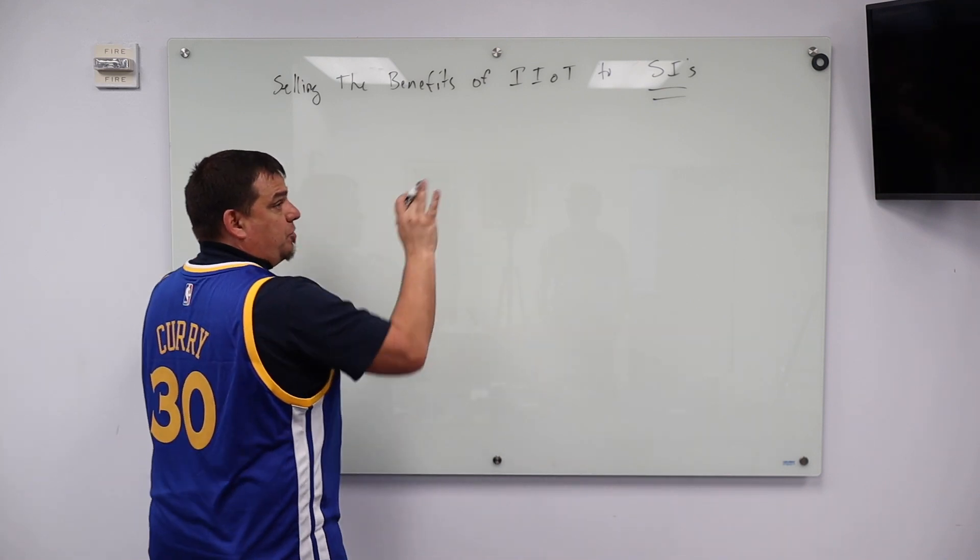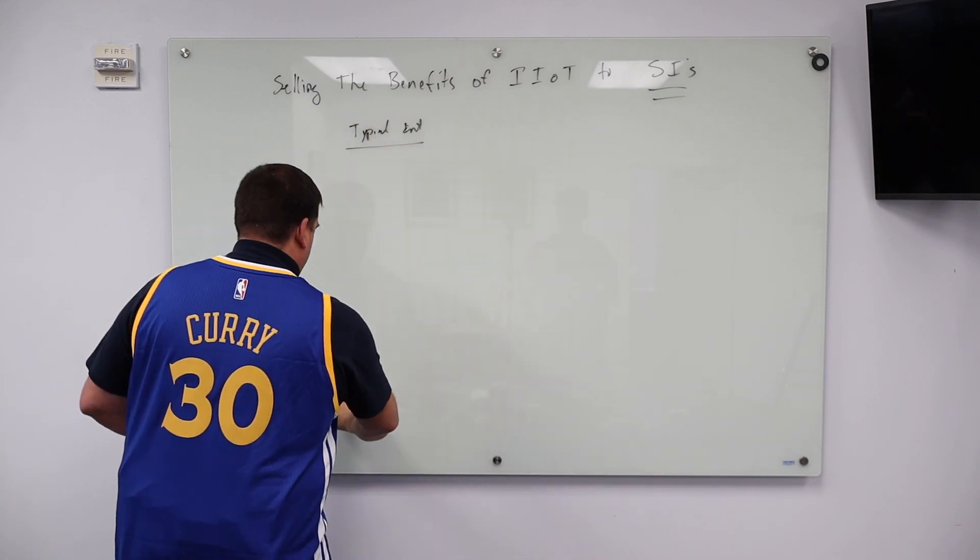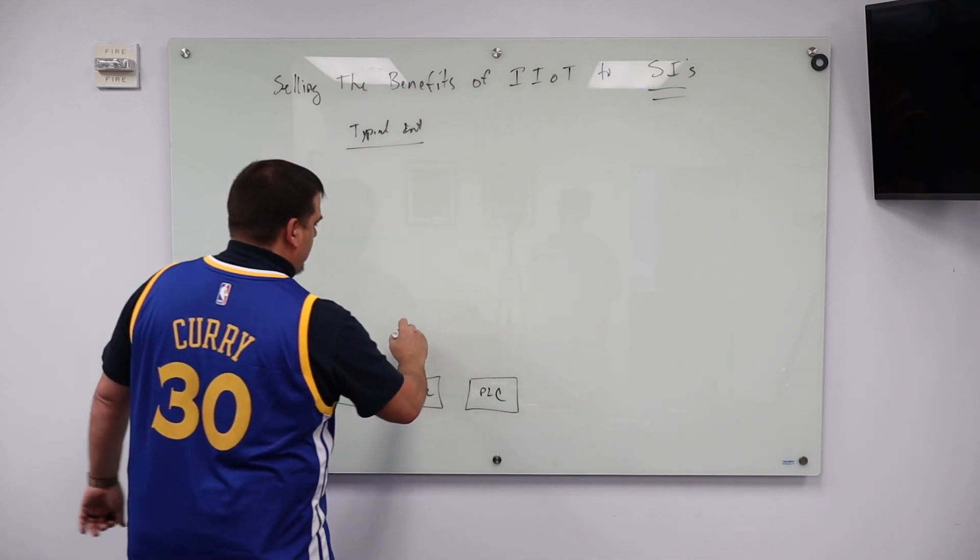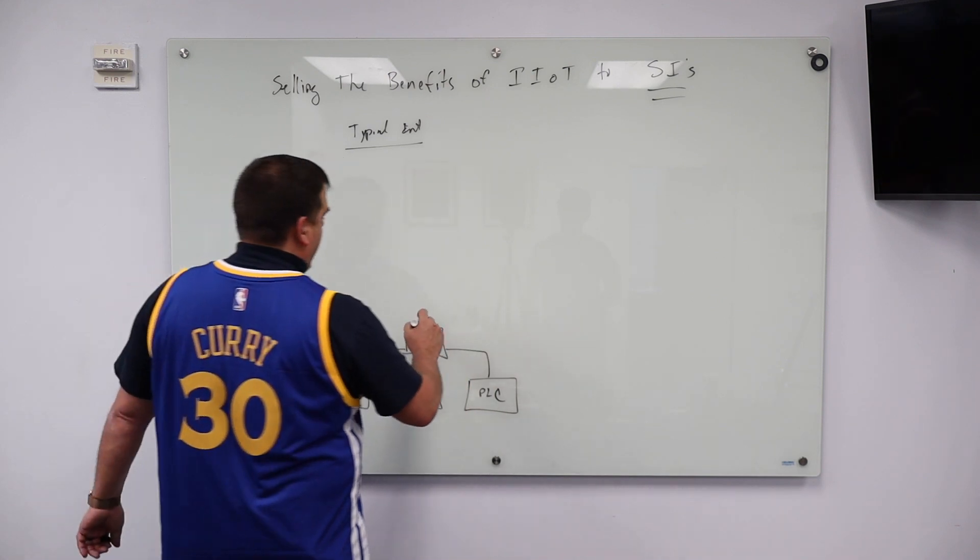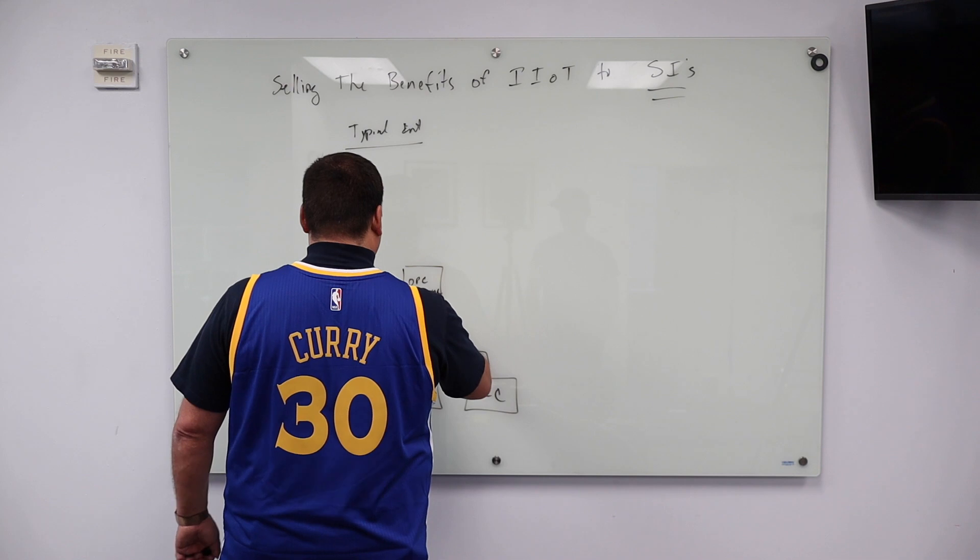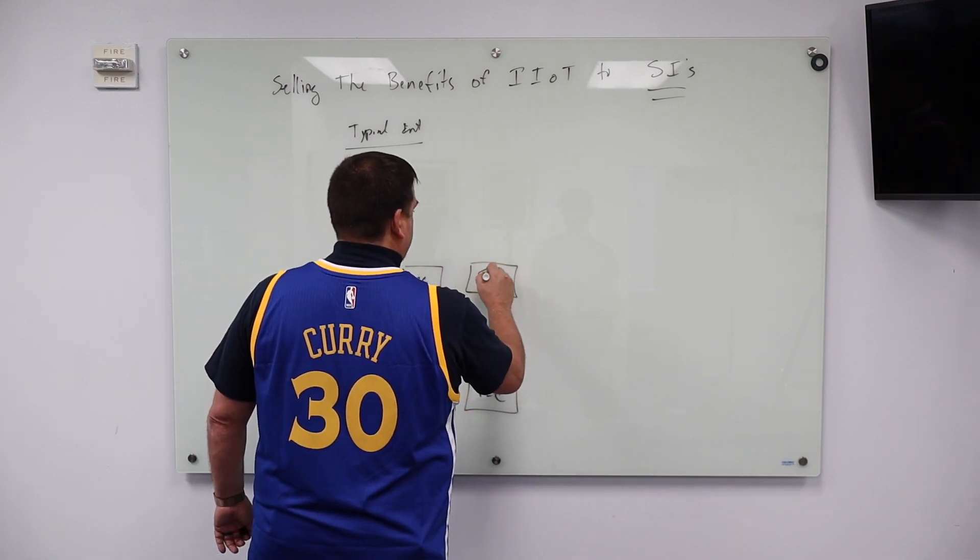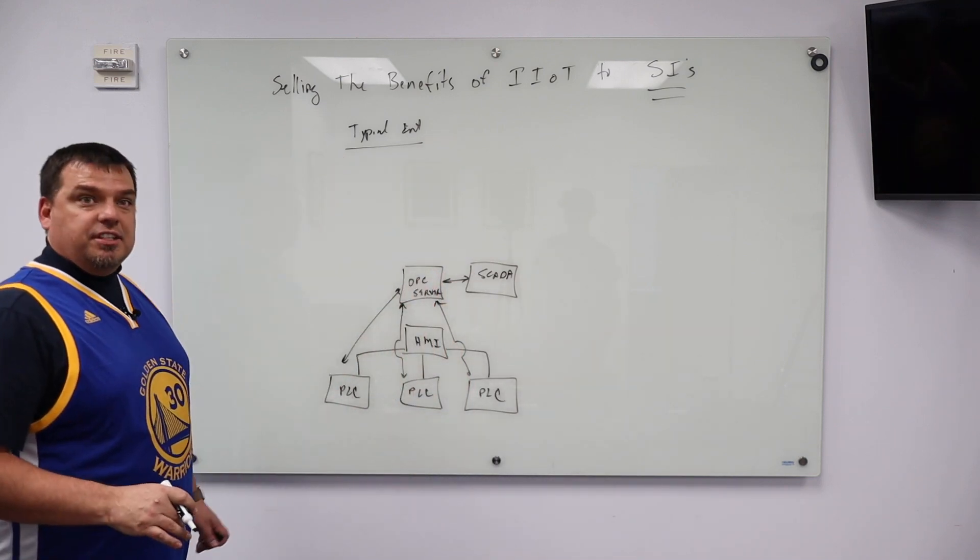So I'm going to do two drawings here. One is the typical integration. Which is very simple. I've got a couple of PLCs out on the edge. I have one HMI for let's say all my PLCs. I have one OPC server and that OPC server is talking to all three of my PLCs. I have my SCADA system, which talks to my OPC server, which talks to my devices in the field.